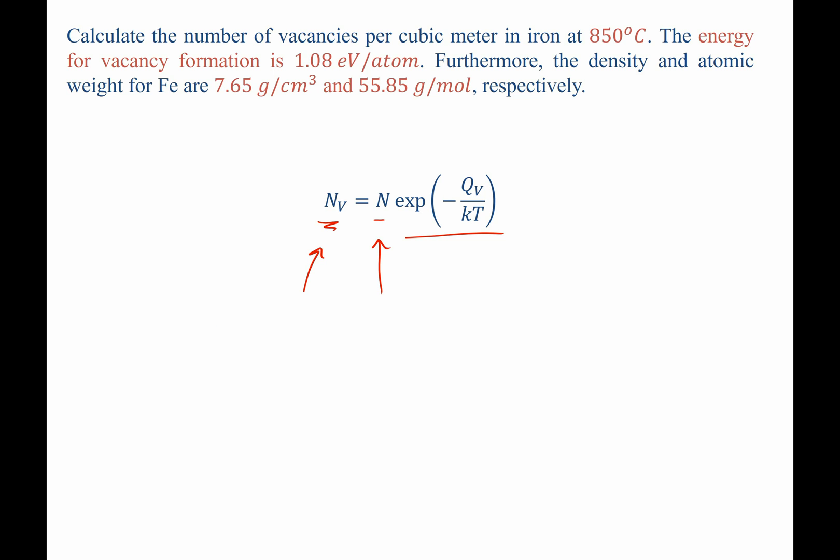Now N is the site concentration. So it's the number of atoms, Z, per unit volume.